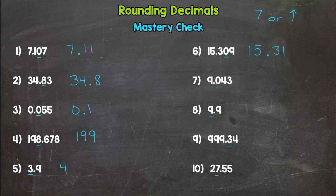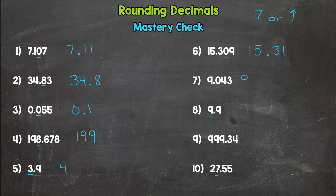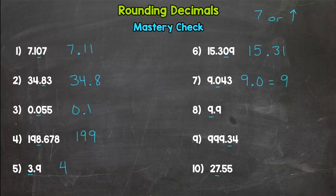Number seven, rounding to the tenths place, and that says stay the same. So if you put 9.0, that would be fine, right? But it's just a whole number, so you can just have nine too. These are equal, so it doesn't matter.